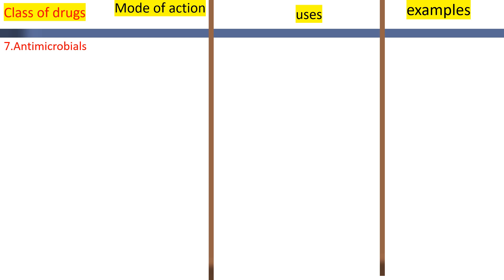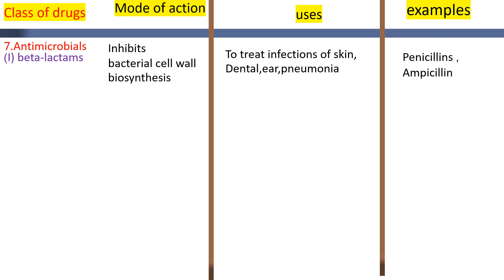Antimicrobials include beta-lactam antibiotics. Beta-lactam antibiotics inhibit the bacterial cell wall synthesis and destroy the bacteria. They are used to treat infections of the skin, tendons, ear, and pneumonia.